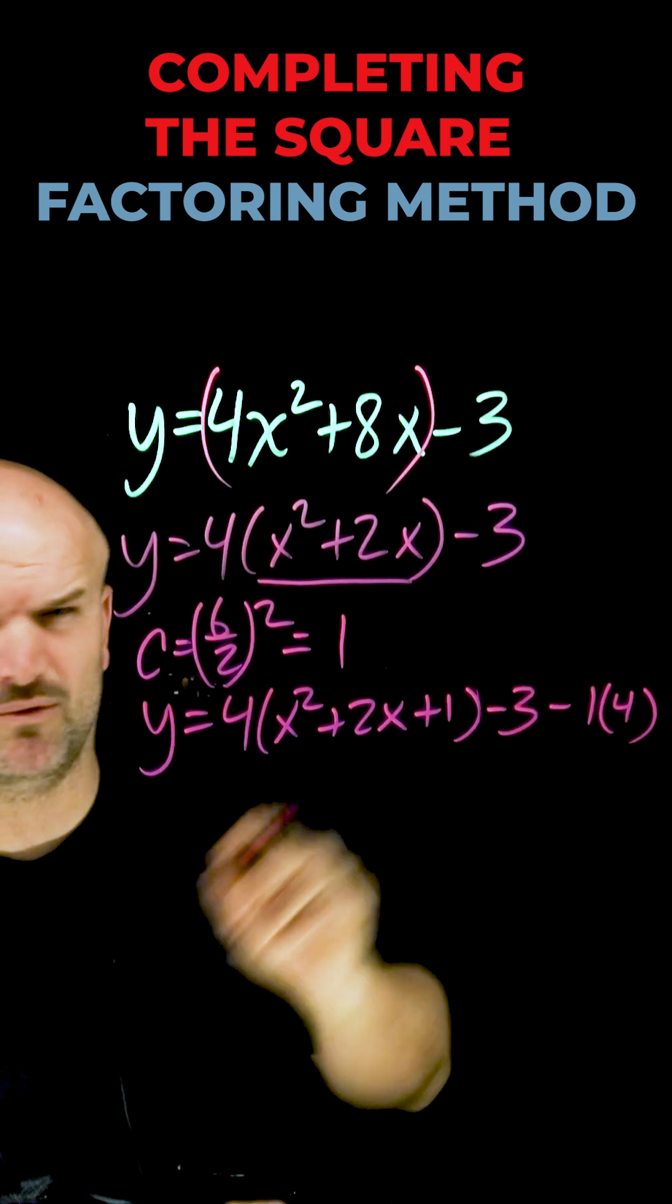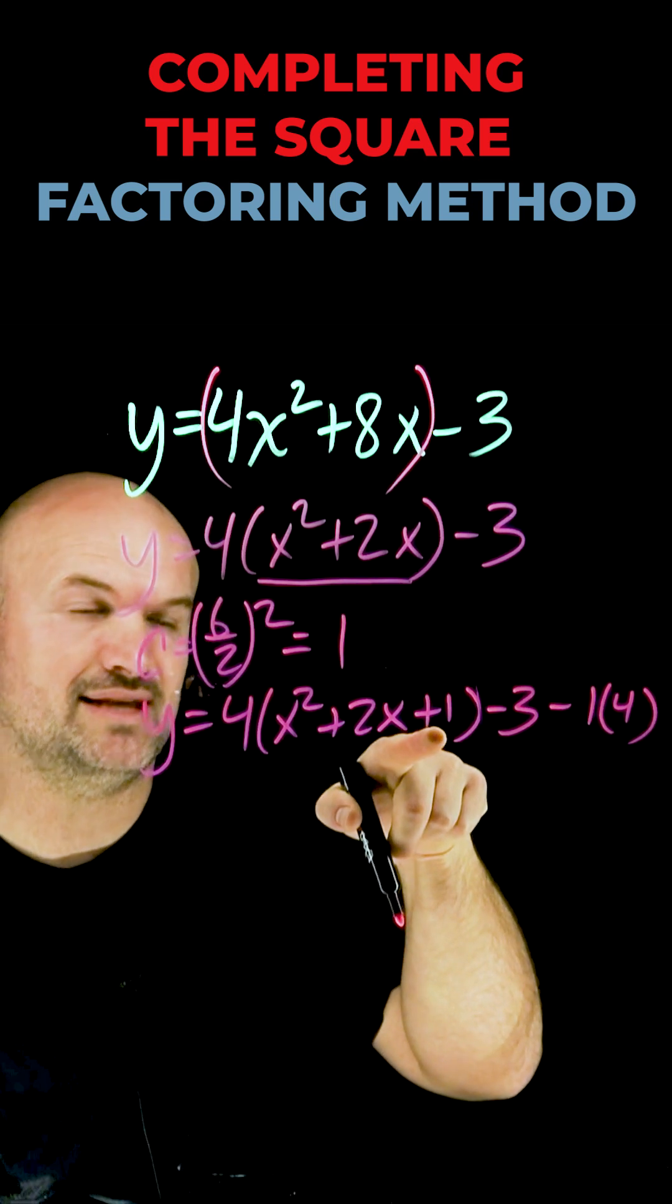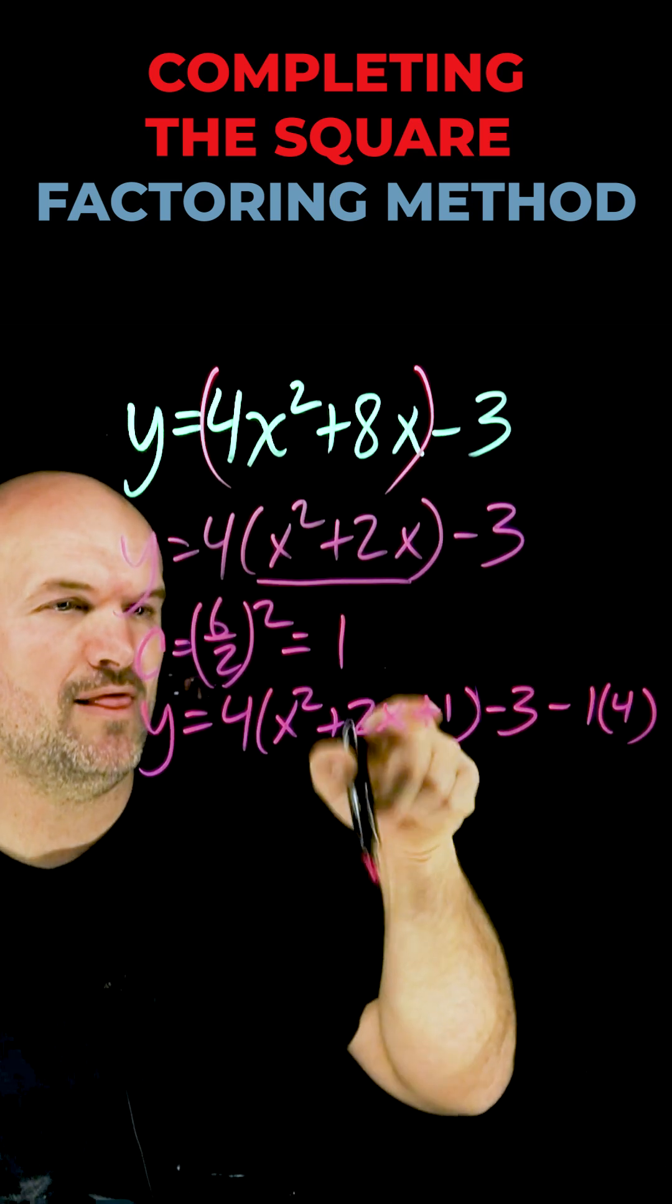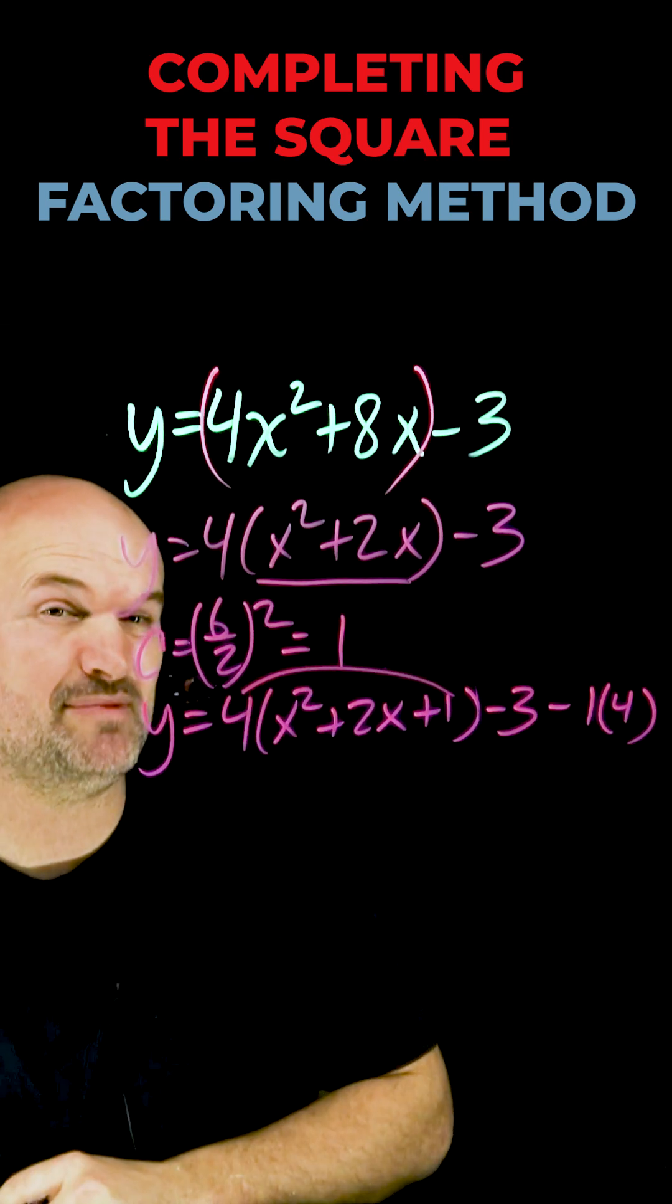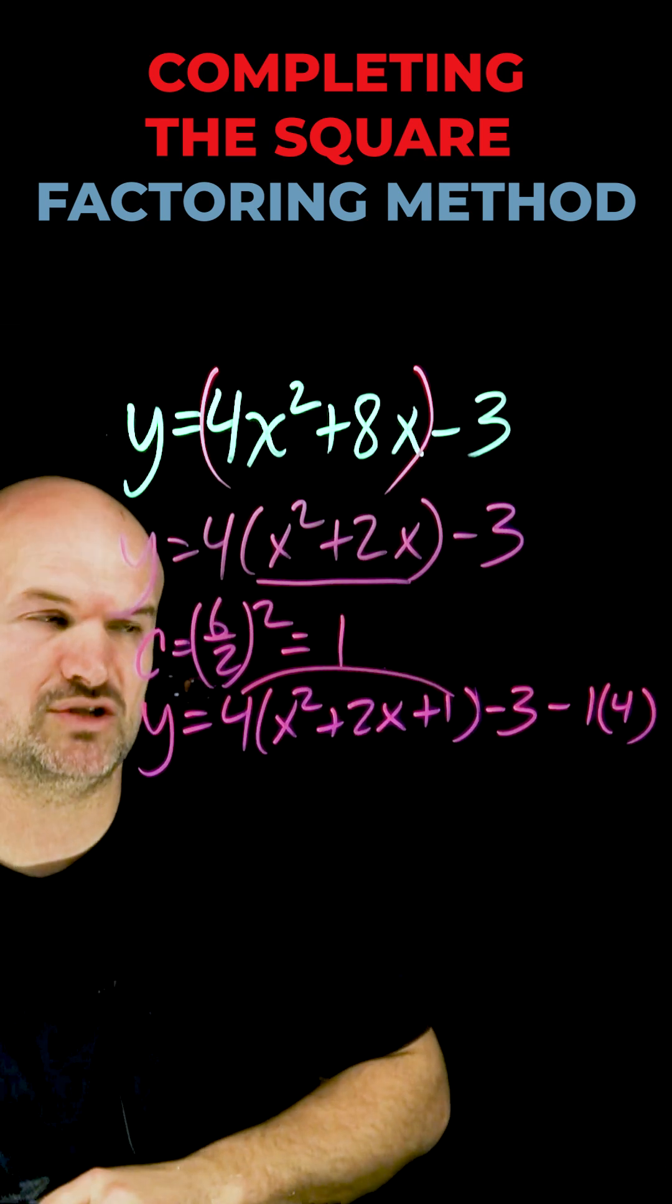Okay, so you might have said well, where'd this 4 come from? It's really important to recognize I added a 1 inside this parentheses, but I didn't really add a 1, right? This 1, via the distributive property, is being multiplied by 4. That's why when I subtracted the 1 over here, I also needed to multiply that by 4.